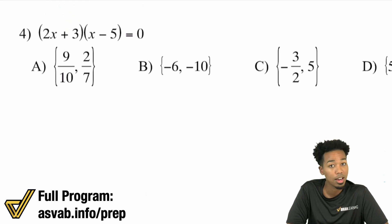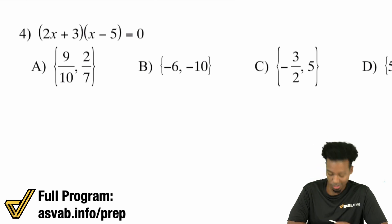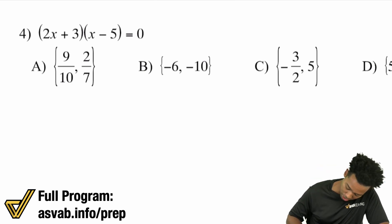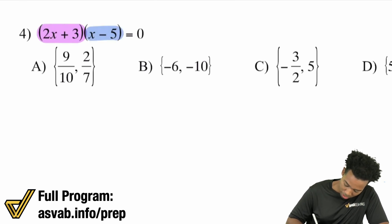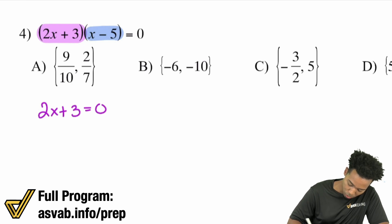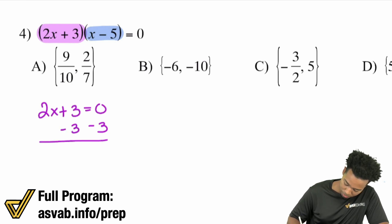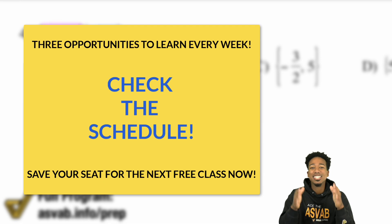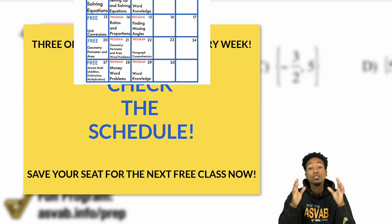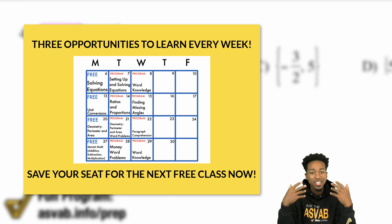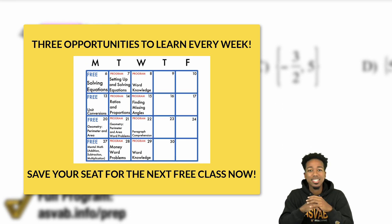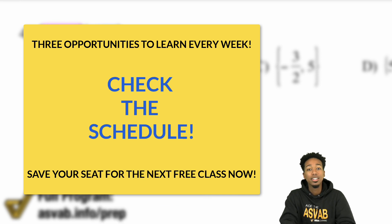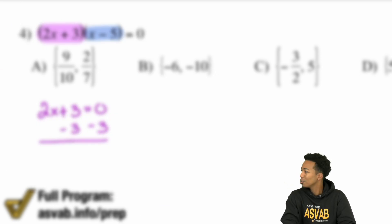We have two x plus three times x minus five equals zero. Again, just apply the zero product property once you're at this point. So we have two x plus three — set that equal to zero. We subtract three from both sides. And here's your regularly scheduled announcement: I host a free class every single week and more classes beyond that. Make sure to check the group tutoring schedule so you know when the classes are and when you can expect to see me live to raise your score and get that job you want. Click there to see the schedule.